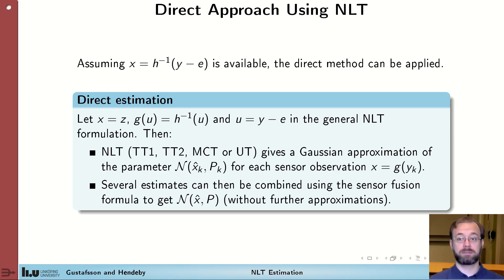The first approach we'll use is the direct approach using NLT. In this, we assume that h is invertible, meaning we can actually compute x given y minus e. This is not always the case, but if it is, this is a really direct and intuitive way of obtaining an estimate of x. The direct approach follows as this: we assume that the nonlinear function applied to u is h inverse. u is y minus e, and since we only have the measurements, we know the mean of u being the measurements we got. e just contributes with noise, and the output is then the parameter x which we're looking for.